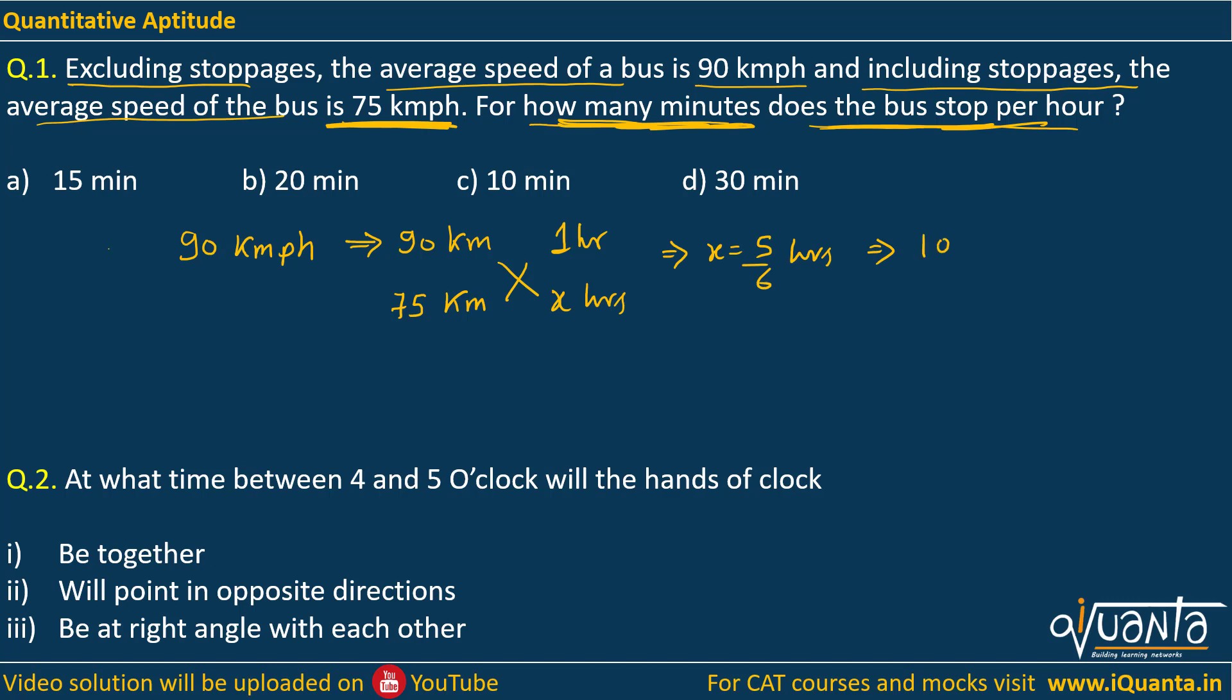So usually the bus should take 50 minutes to travel 75 kilometers, but now it is taking one hour. So that means the stoppage time is 60 minus 50 minutes, which means 10 minutes is the stoppage time per hour.